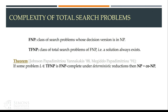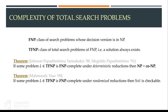FNP is the class of problems whose decision is NP, and TFNP is the class of search problems that always have a solution. Since the introduction of this complexity class, we have results showing this is probably different than NP. If a problem is in TFNP, it cannot be FNP-complete under deterministic reduction unless NP equals co-NP. For randomized reductions, if this is the case, then SAT is checkable.